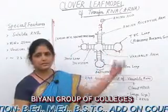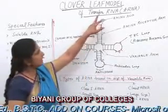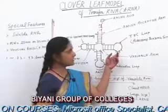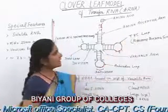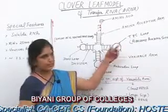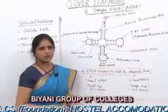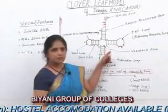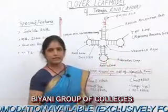The next arm is called the TΨC arm or ribosome binding site. As the name suggests, this is the site where the ribosome binds to the transfer RNA, so the amino acid is carried to the ribosome where protein synthesis starts. This arm is also named the TΨC loop because of the presence of the sequence thymine, pseudouridine, and cytosine in the TΨC loop. Between the TΨC arm and the anticodon arm, there is a variable arm, which is named so because the number of nucleotide bases varies here.